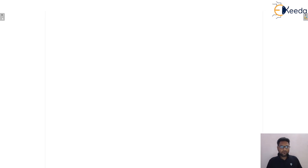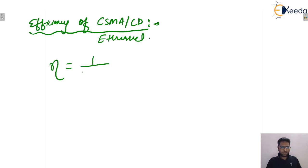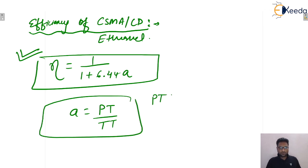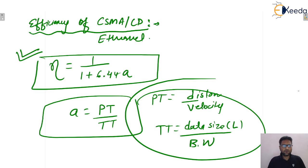Next, the efficiency of Ethernet or CSMA/CD. There is a long derivation involving contention slots, but for GATE it is not required. The formula is: Efficiency = 1 / (1 + 6.44A), where A = propagation time / transmission time. Propagation time = distance / velocity of the cable, and transmission time = L / Bandwidth. These parameters will be given in the question and you can find the efficiency.